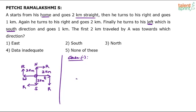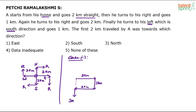We are habituated to drawing a horizontal line, so by default we tend to take east direction. So A starts from the starting point and goes 2 kilometers straight in the east direction. He then turns to his right — for a person facing east, right is towards south. He turns right and goes 1 kilometer. He again turns to his right; the person is now facing south, and for a southward-facing person right would be towards our left — that is west. Finally he turns to his left; for a person facing east, left will be towards south. So finally he turns to his left, which is south.